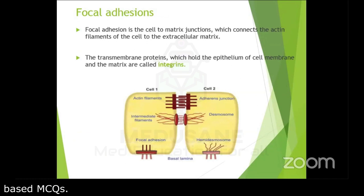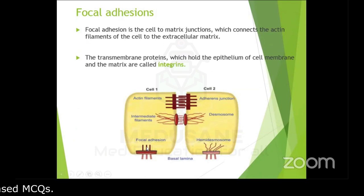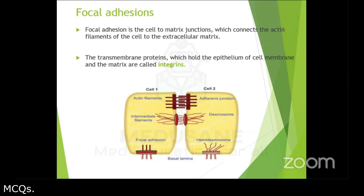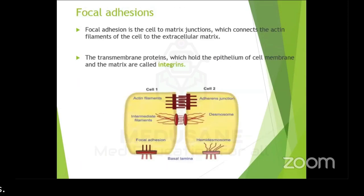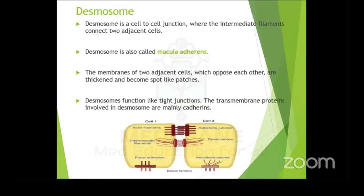Focal adhesions are anchoring junctions formed between a cell and the extracellular matrix, again through actin filaments. The transmembrane proteins making up focal adhesions are integrins — whereas adherens junctions use cadherins, focal adhesions use integrins.